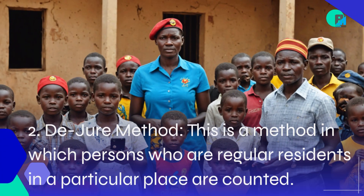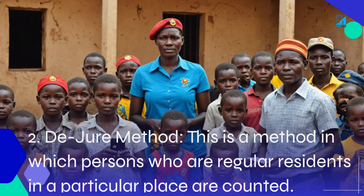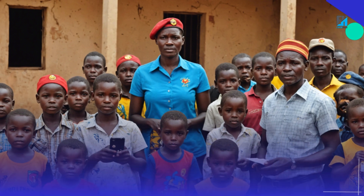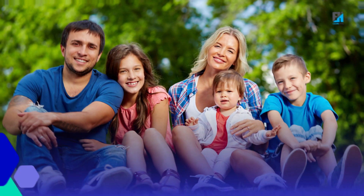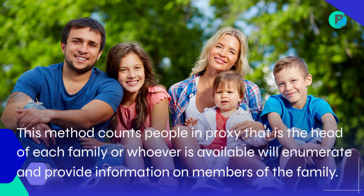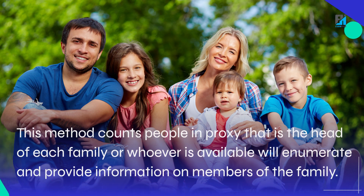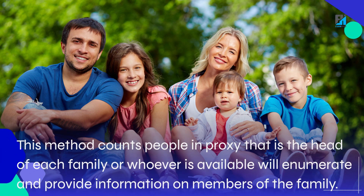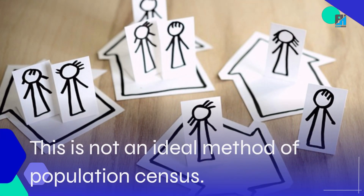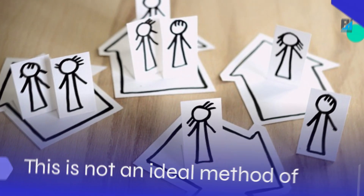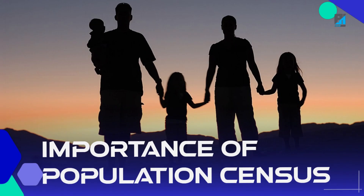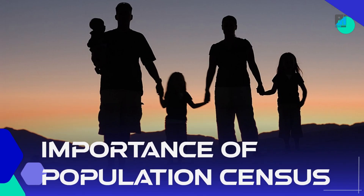The de jure method is a method in which persons who are regular residents in a particular place are counted. This method counts people by proxy — that is, the head of each family or whoever is available will enumerate and provide information on members of the family. This is not an ideal method of population census.